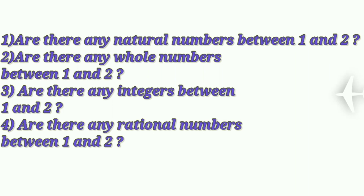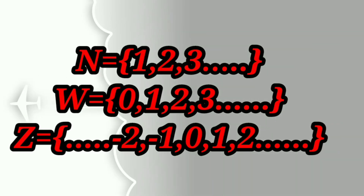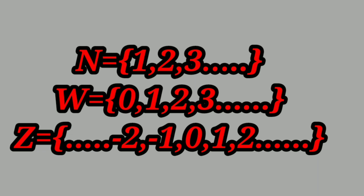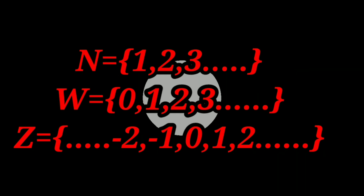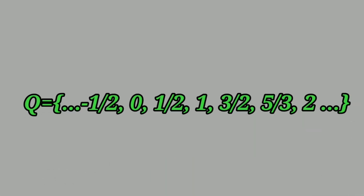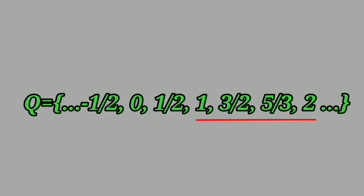In the set of natural numbers, there exists no natural number between 1 and 2. In the set of whole numbers, there exists no whole number between 1 and 2. In the set of integers, there exists no integer between 1 and 2. But in the set of rational numbers, we observe rational numbers existing between 1 and 2.